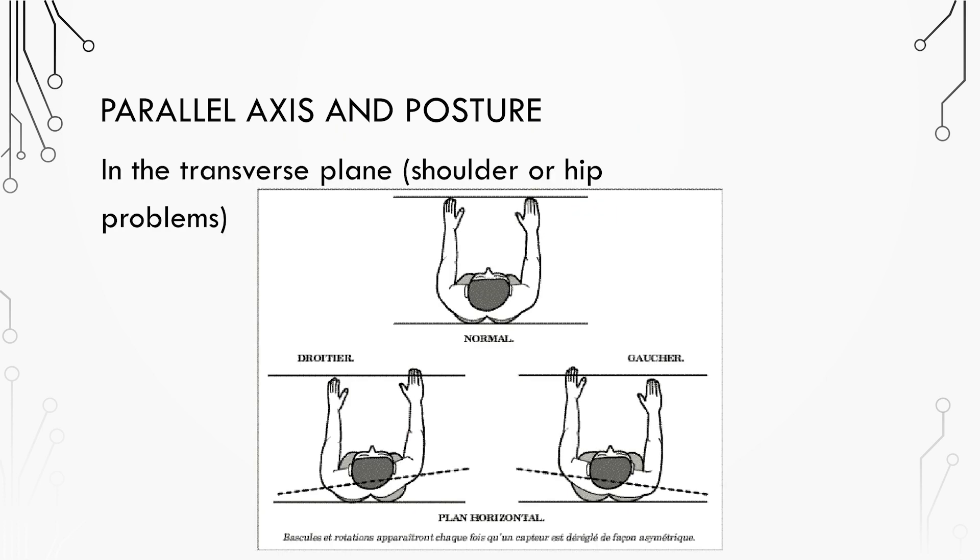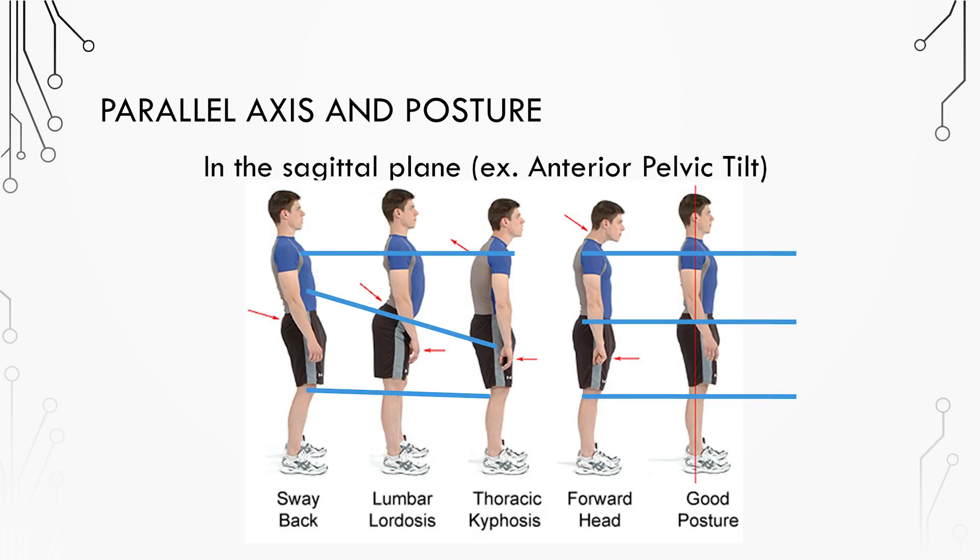In the transverse plane, it's easy to notice shoulder or hip rotation problems. In the sagittal plane, you can observe pelvic or lumbar tilt, which can lead to kyphotic or lordotic postures.